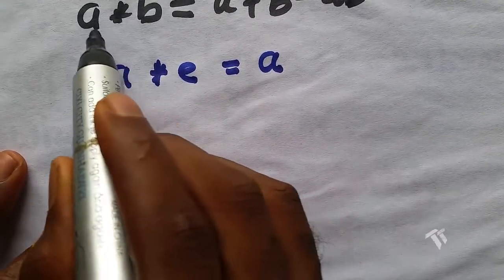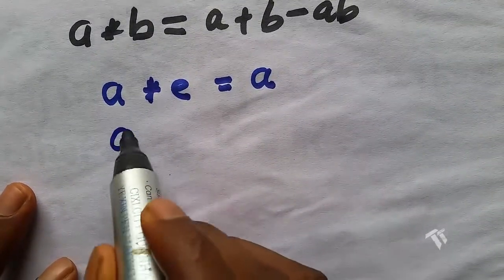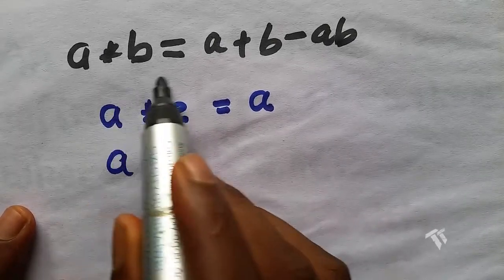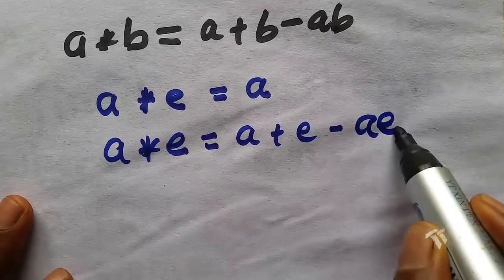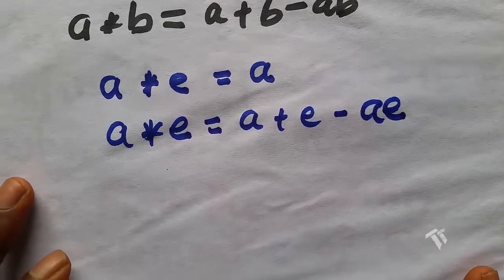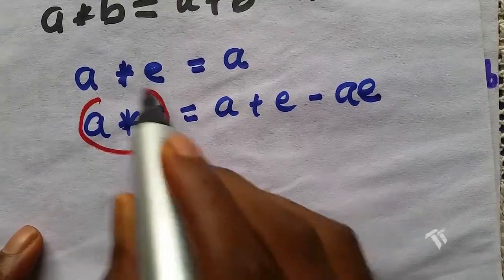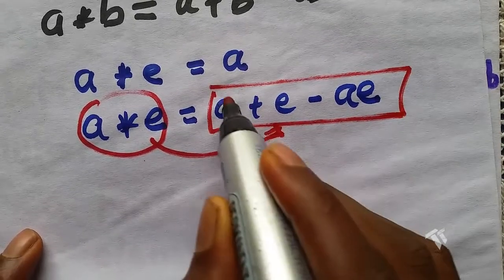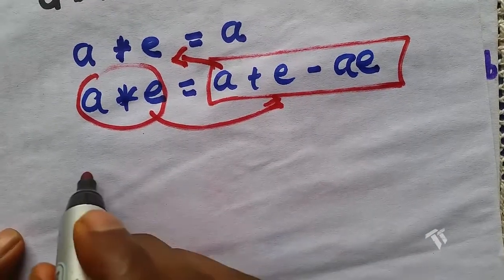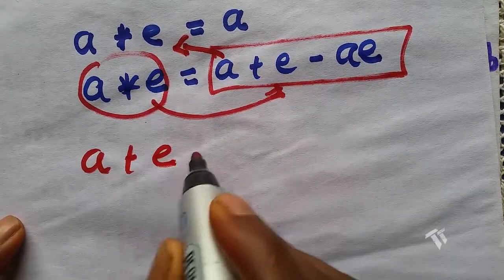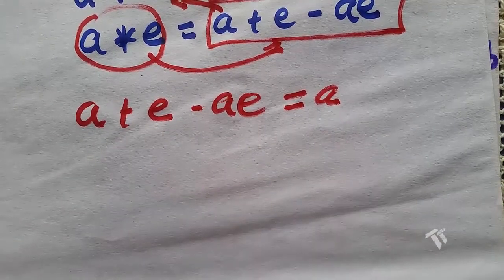Since a★b = a + b − ab, it means that a★e = a + e − ae. Because a★e must equal a, we substitute to get: a + e − ae = a. Subtracting a from both sides gives e − ae = 0.